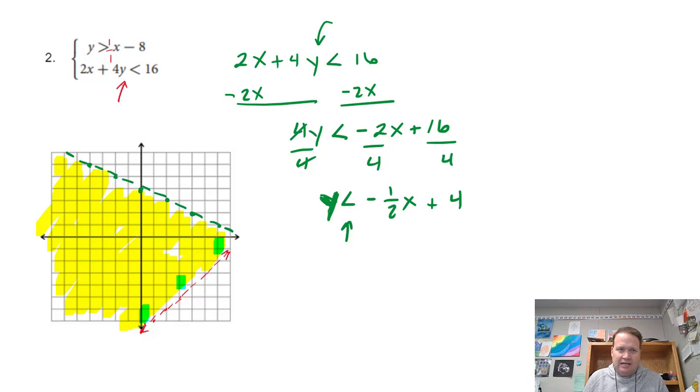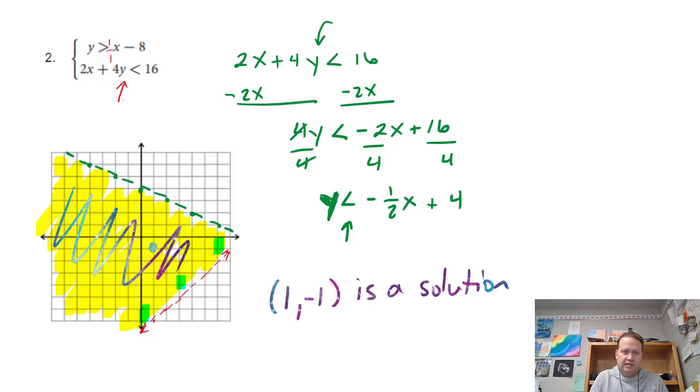One of the things that you're going to be asked to do is to identify a point that is a solution. So we could find that lots of ways. One way is just to pick anything here in the shaded region. For example, that point right there is a part of the solution, and that would be right one and then down one. So we could say this, 1 comma negative 1 is a solution because it's in the shaded area. Any of these points, any of the points ordered pairs in there would work.